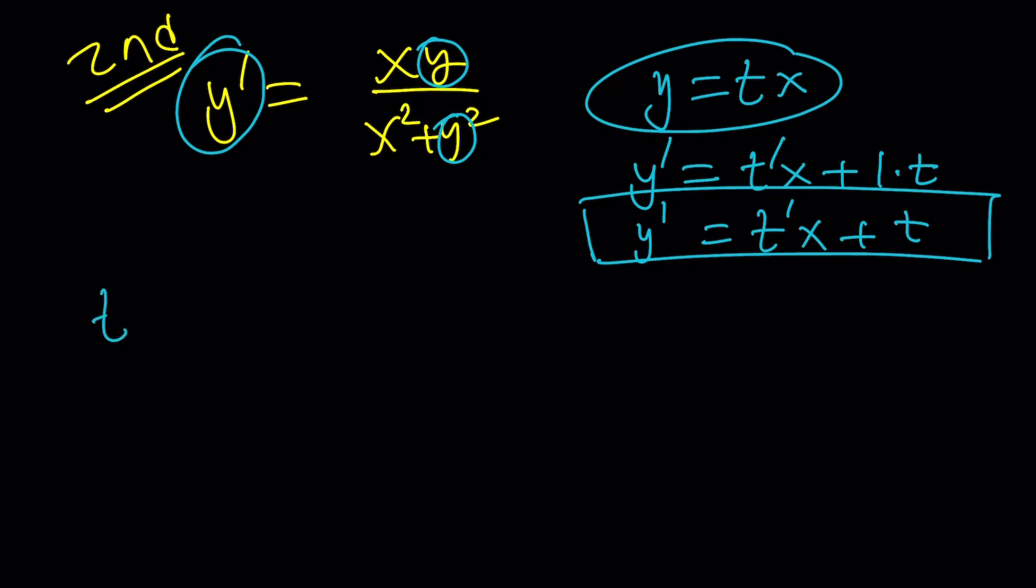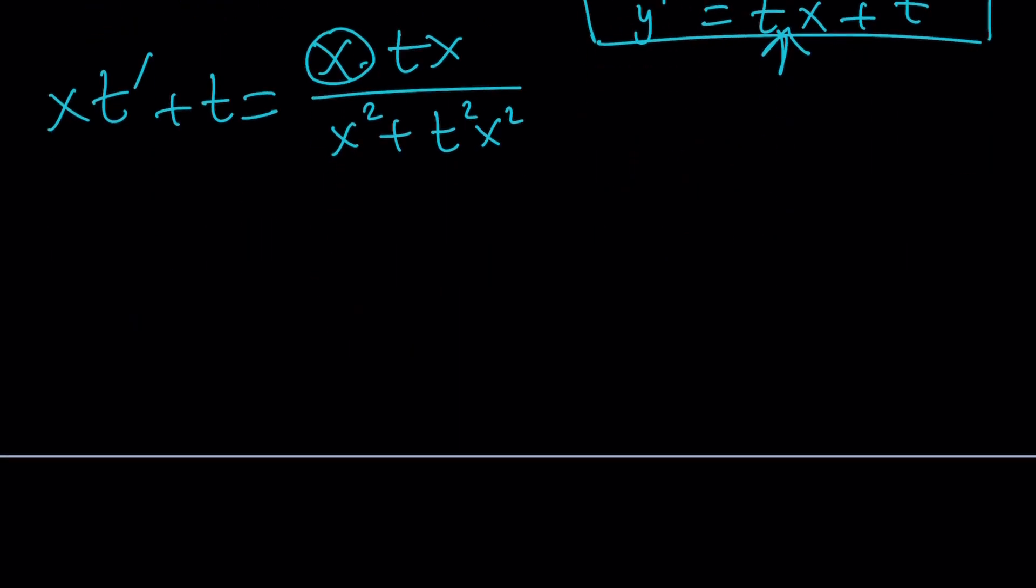xt' - I want to write the x first - plus t equals... Now I'm going to replace y with tx and y with tx. It's going to be t²x². This gives us x². So let's go ahead, x² times t. And then we'll factor out an x². And this will become 1 + t². Awesome. Now we can go ahead and get rid of the x². That was the whole idea because this is a homogeneous equation. Make sense? Awesome.